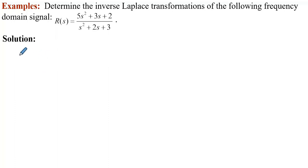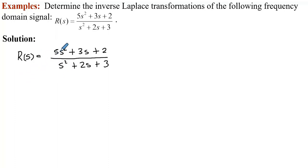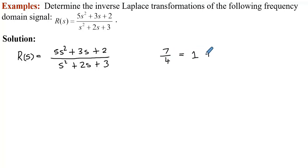So we have R(s) equal to 5s² + 3s + 2 over s² + 2s + 3. Now that we know this is an improper fraction, recall the example of 7 over 4 as an improper arithmetic fraction, which we can represent as 1 plus 3 over 4 — normally written as the mixed number 1 and 3 quarters. To get there, we divide 7 by 4, get 1 with remainder 3, and write that.